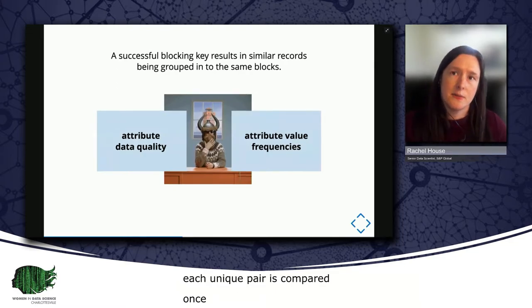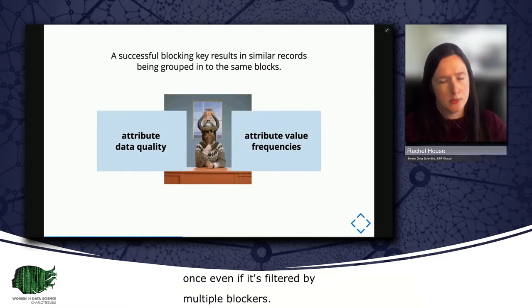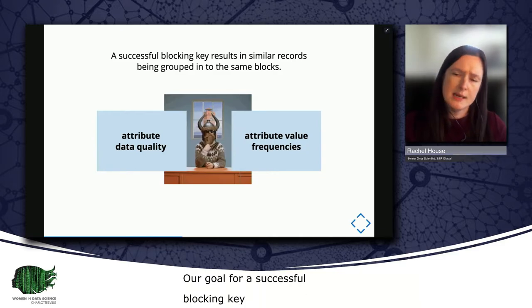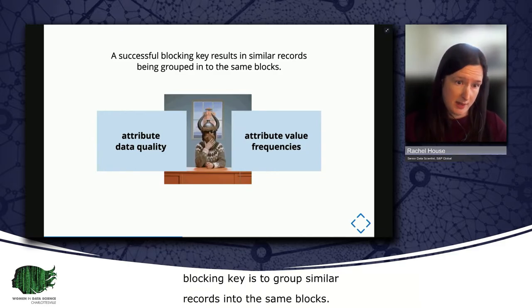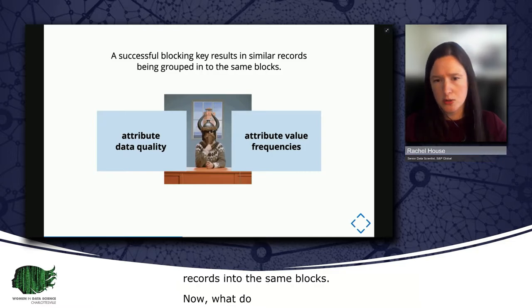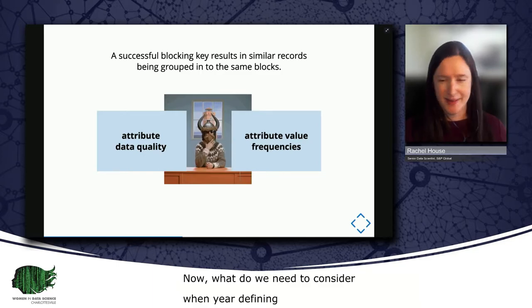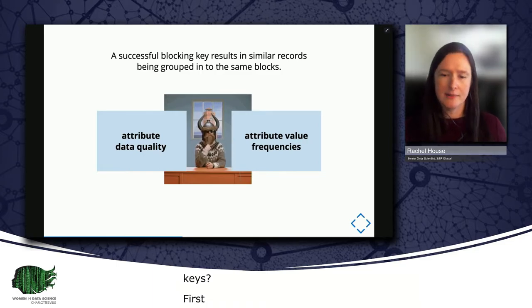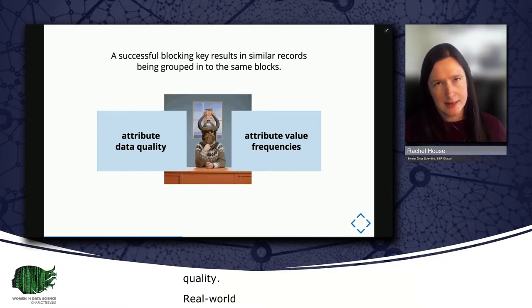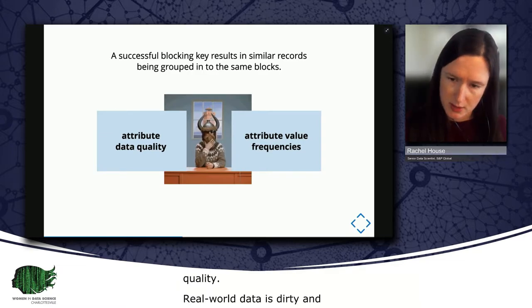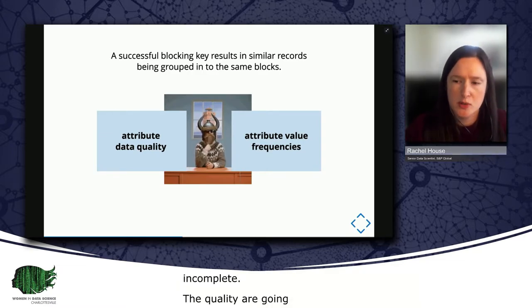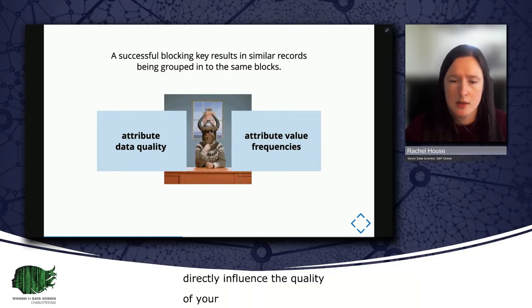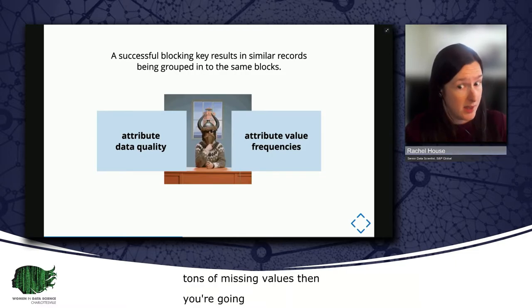Our goal for a successful blocking key is to group similar records into the same blocks. Now, what do we need to consider when we're defining blocking keys? Well, first we have attribute data quality. As we've already covered, real world data is dirty and incomplete. The quality of the data attributes you have available are going to directly influence the quality of your blockers. For instance, if you have an attribute that has tons of missing values across the dataset, then you're going to get a lot of records sorted into a block that has a null value for the blocking key, whether or not those records are actually similar to each other.